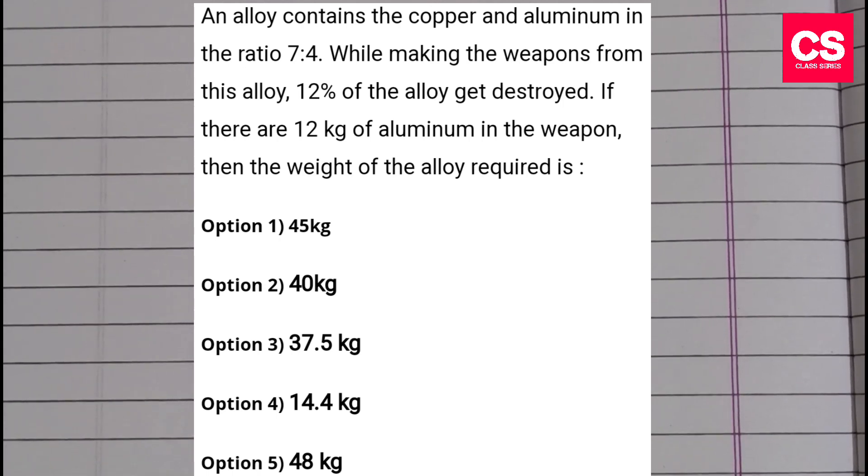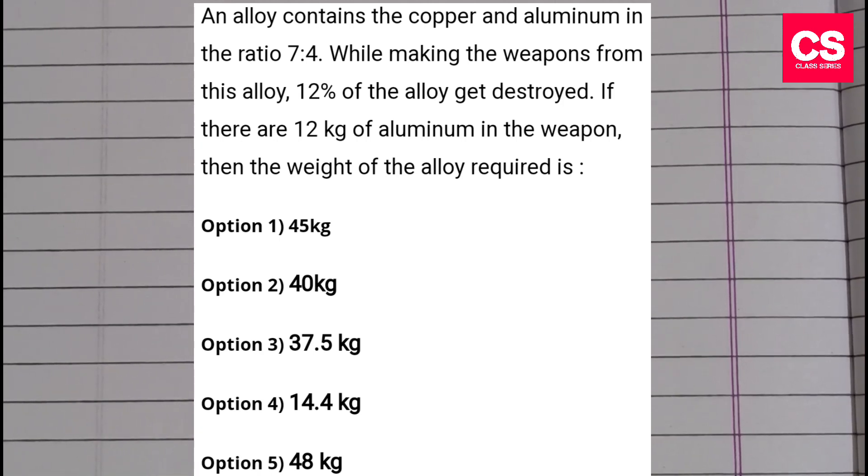In the question, the alloy contains two things: copper and aluminum. The ratio is 7:4.